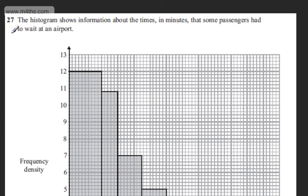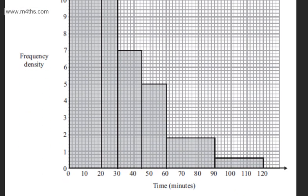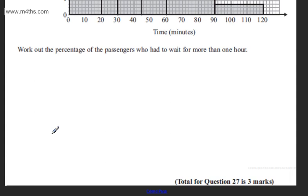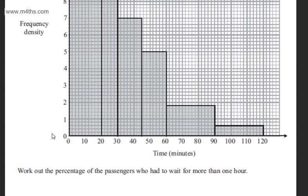This is question number 27. The histogram shows information about the times in minutes that some passengers had to wait at an airport. We've got the frequency density and the time in minutes. We're asked to work out the percentage of the passengers who had to wait for more than one hour. The question carries three marks.